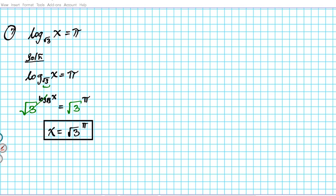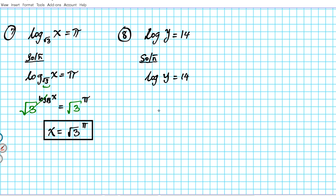For question eight, we have log of y equals 14. This is a common log again, so the hidden base is 10. We exponentiate both sides of our equation using 10 as the basis, giving us 10 raised to log base 10 of y equals 10 to the 14th. On the left side, we have inverse operations that cancel, leaving us with y equals 10 raised to the 14th power. That is the equivalent exponential form of the original equation.